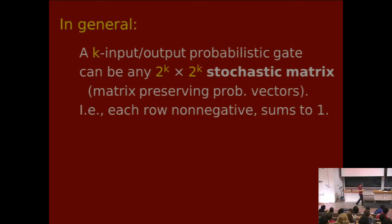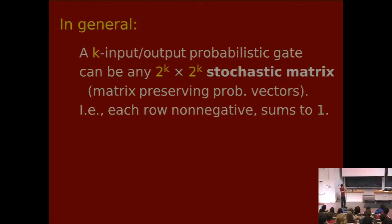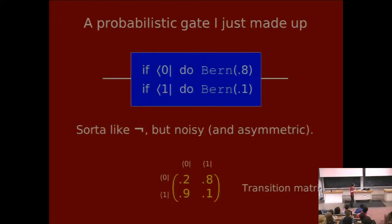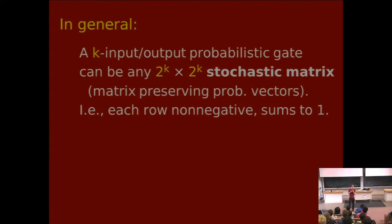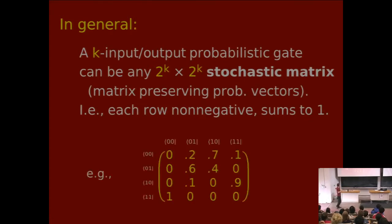In general, if you have a probabilistic gate, you can make it a physical device that also has some randomness. If it has K input wires and K output wires, you can implement any 2^K by 2^K matrix which is a stochastic matrix. That means a matrix where all the rows add up to one — a matrix that preserves probability vectors. If you take a probability vector — a vector that adds up to one — and multiply it by this matrix, you'll get a probability vector out. For any such matrix, you can make a gate that does that, assuming you have some physical way to generate randomness.